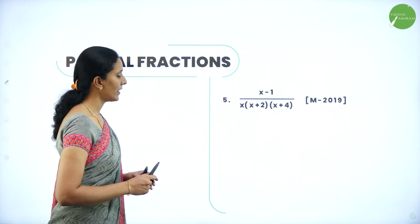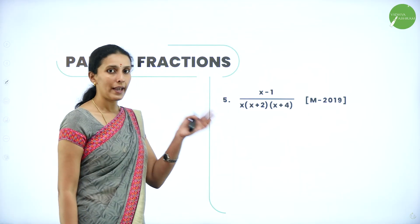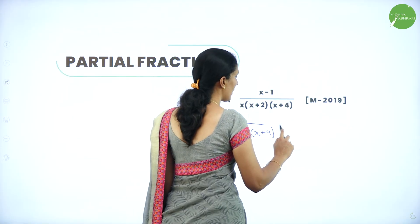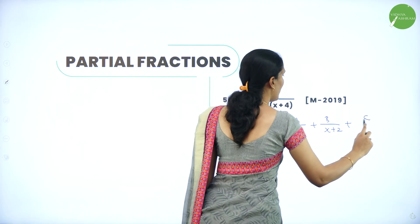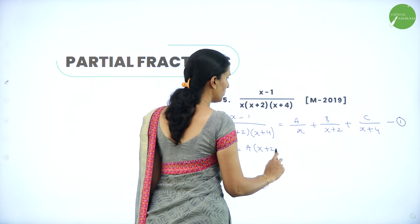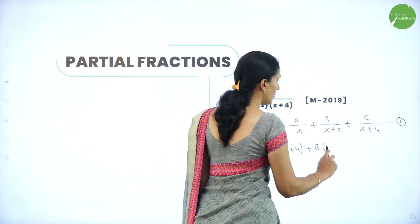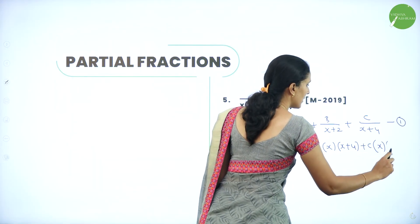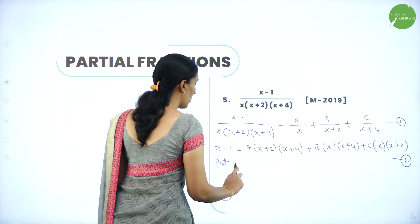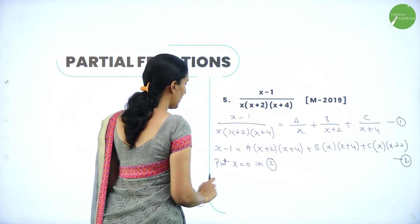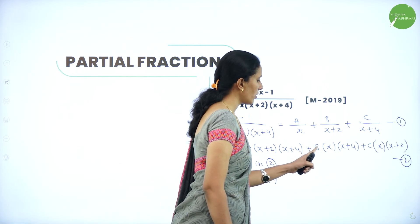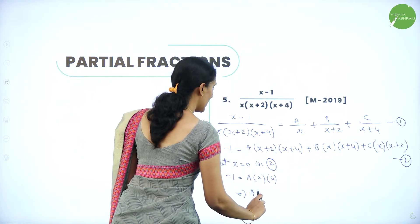The next question, which was asked in March 2019, is (x−1) divided by x(x+2)(x+4). We can write: (x−1)/[x(x+2)(x+4)] = A/x + B/(x+2) + C/(x+4). Take this as equation 1. Multiplying through gives: x−1 = A(x+2)(x+4) + B·x(x+4) + C·x(x+2). Take this as equation 2. Put x = 0: −1 = A(2)(4) = 8A. So A = −1/8.